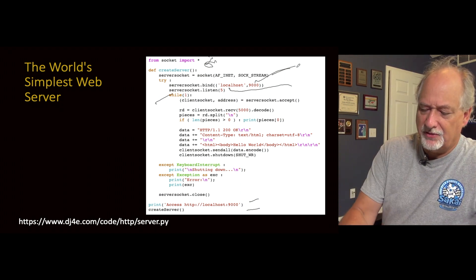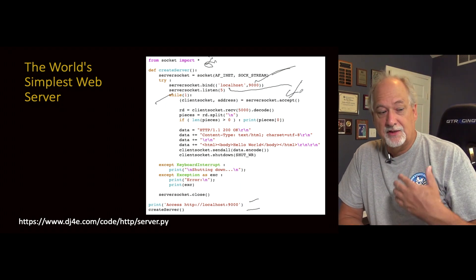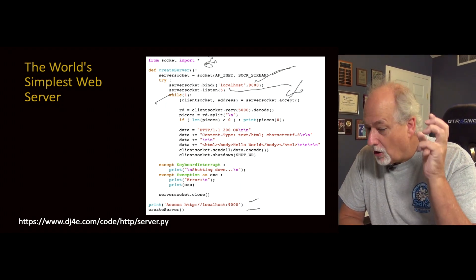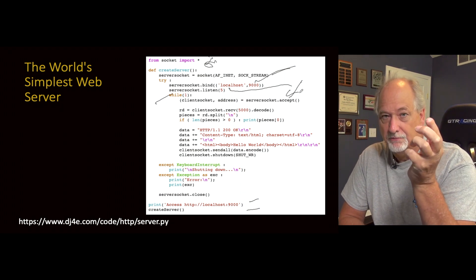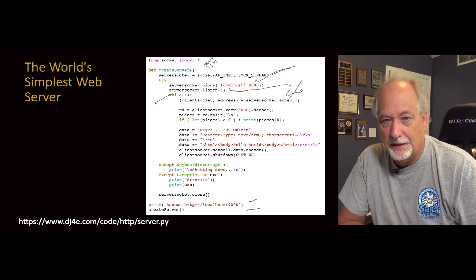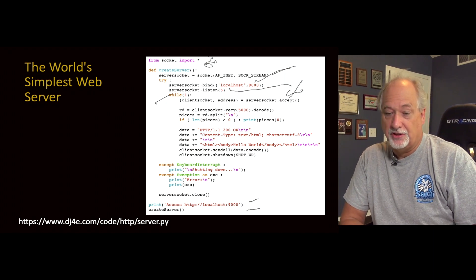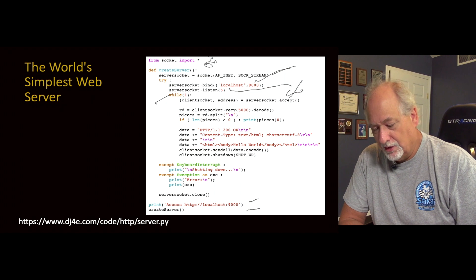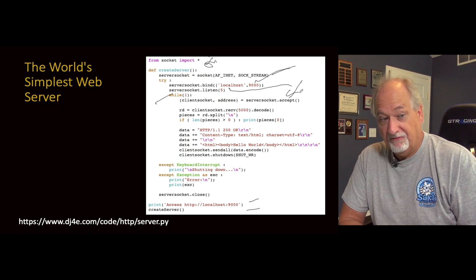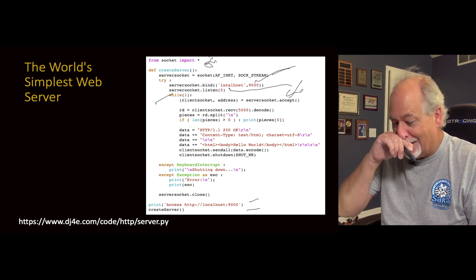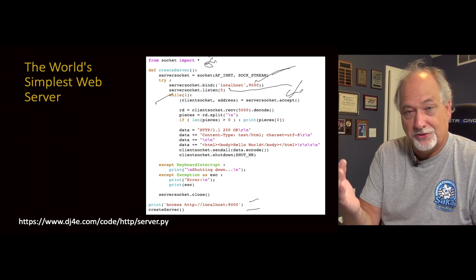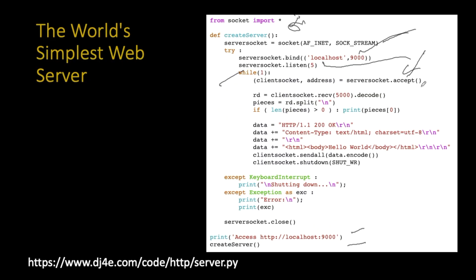Then we go into accept. Accept means: I'm at the phone, I've registered my number and extension, and I'm ready to pick up. So accept is blocking — it stops and just sits there, potentially forever. If nobody calls, nothing happens. The next line never runs until a call comes in or the server goes down. We have to establish the phone call first.